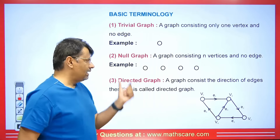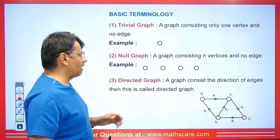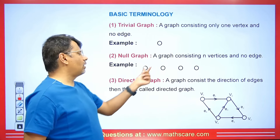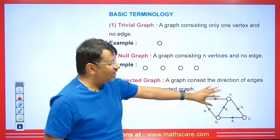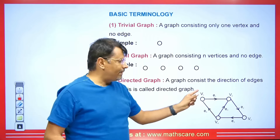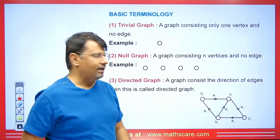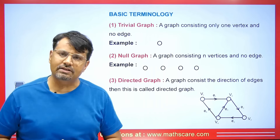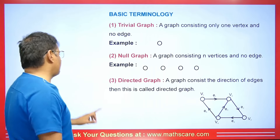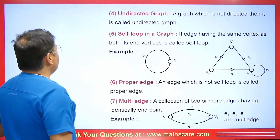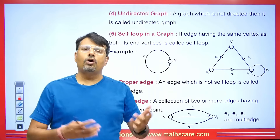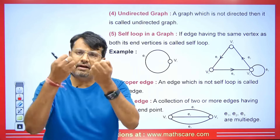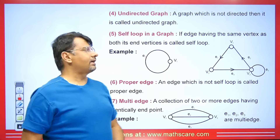Now let's talk about the directed graph. A directed graph is a graph where the direction of the edges is defined — an edge goes from one vertex to another in a specific direction. Next, an undirected graph is a graph where no direction is given for the edges; it is simply called an undirected graph.